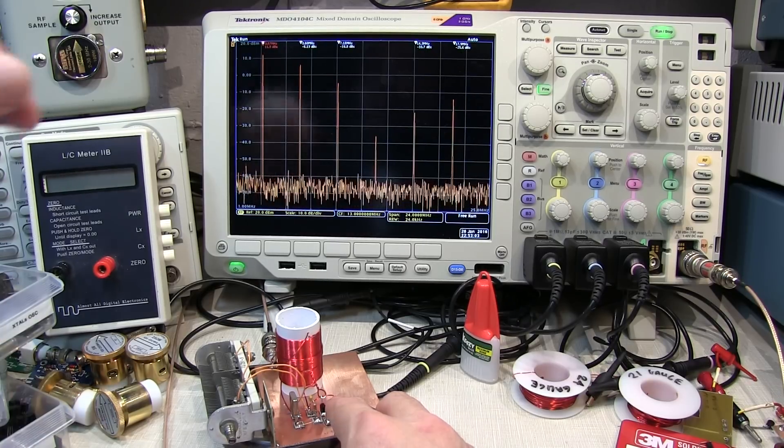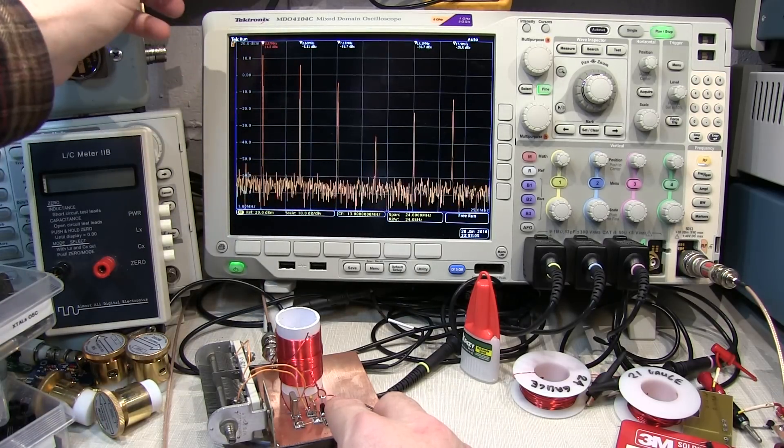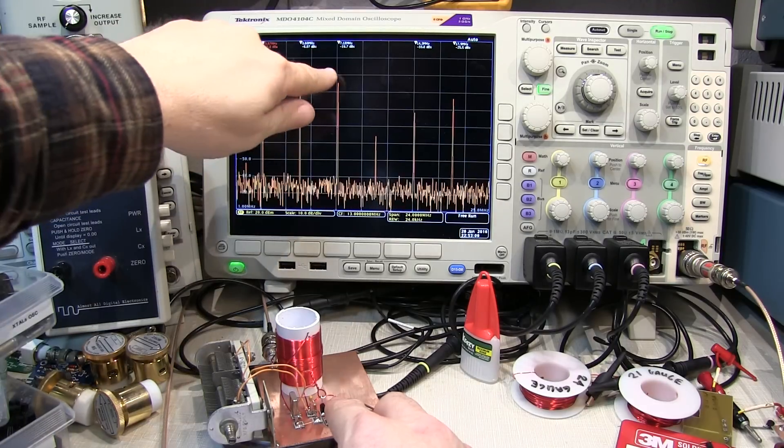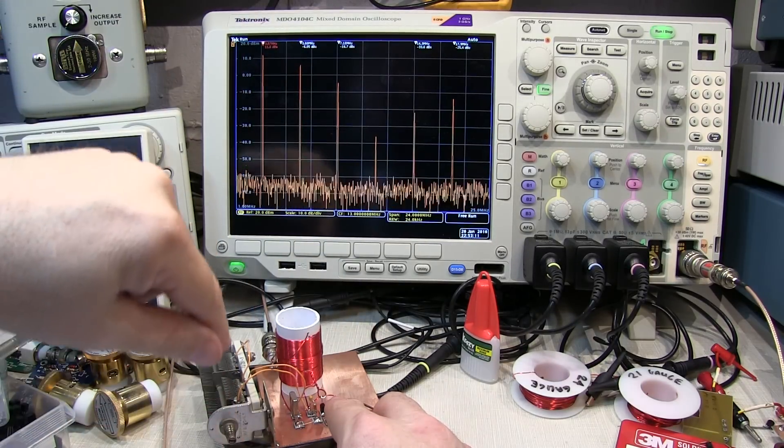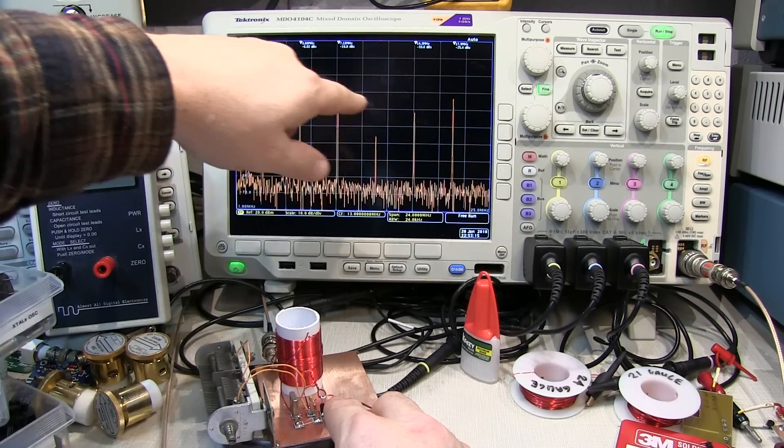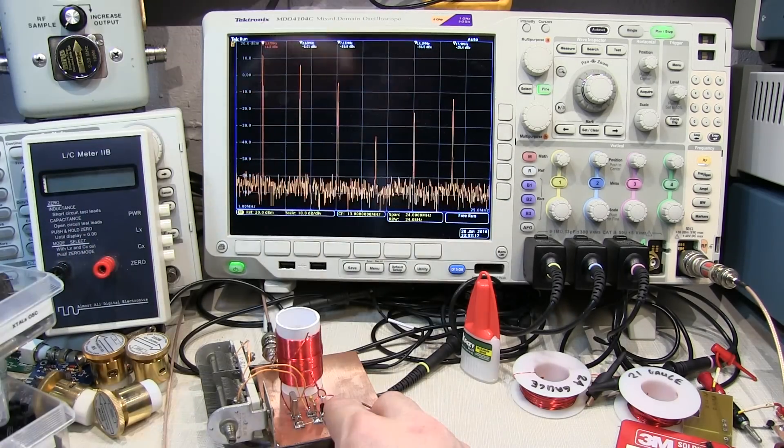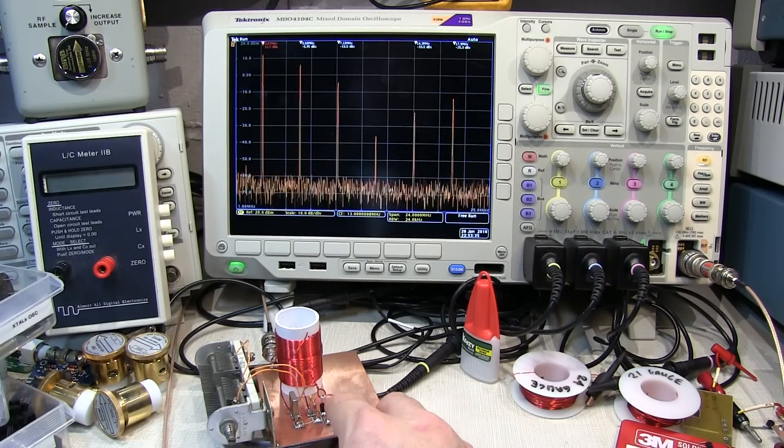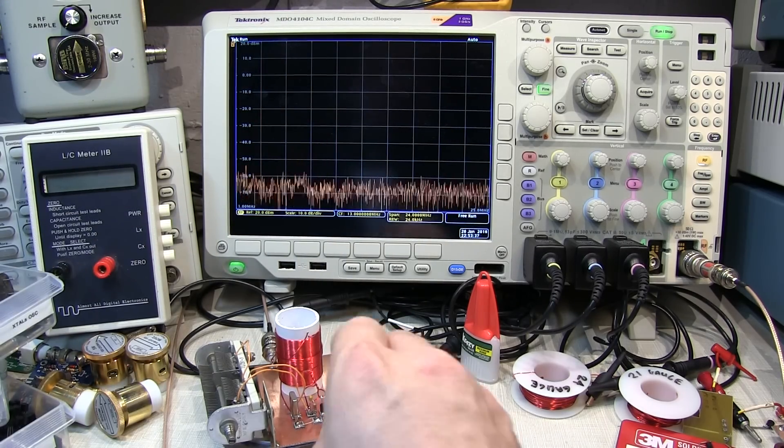Well, that's pretty ugly. There's our fundamental signal right here. The second harmonic is only down about 6 dB. The third harmonic is down about 16 dB. The fourth is not too bad, but then the fifth and the sixth harmonic are down 33 and 25 dB or so. But these are the ones that are a real concern. So it looks like a low-pass filter is in order.